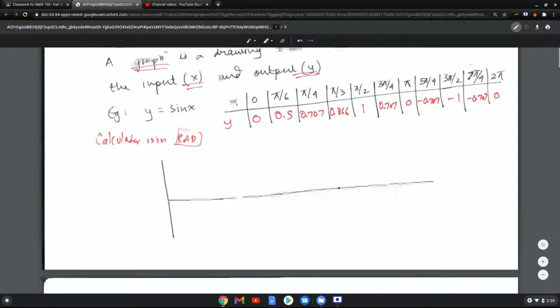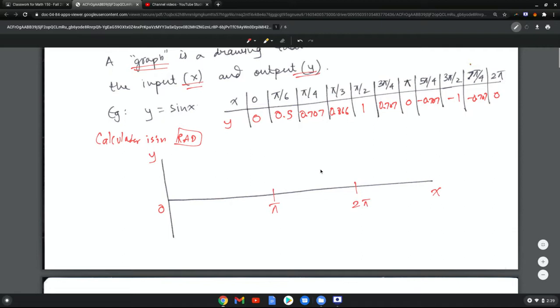Now if I try to plot these values, these are going to be x and these are going to be y values. So I have 0, let's say I have pi, and then I have 2 pi. Now what I notice is from going from 0 to pi, if you see, it reaches a maximum of 1 at pi over 2, and then it starts reducing and comes back to 0. And then it becomes negative and reaches negative 1 at 3 pi over 2.